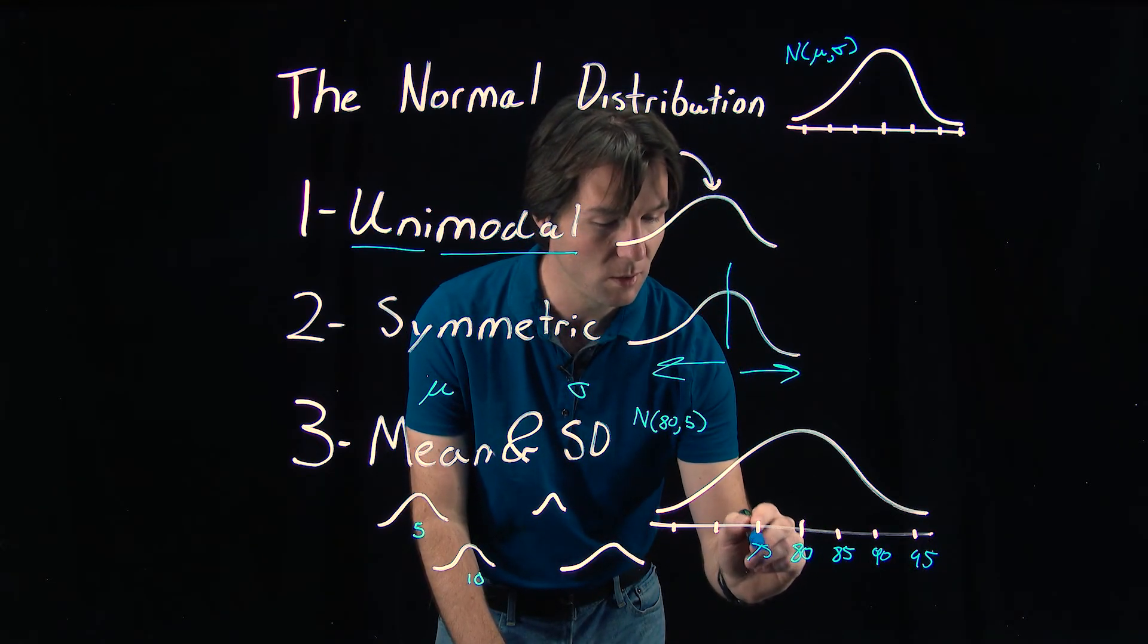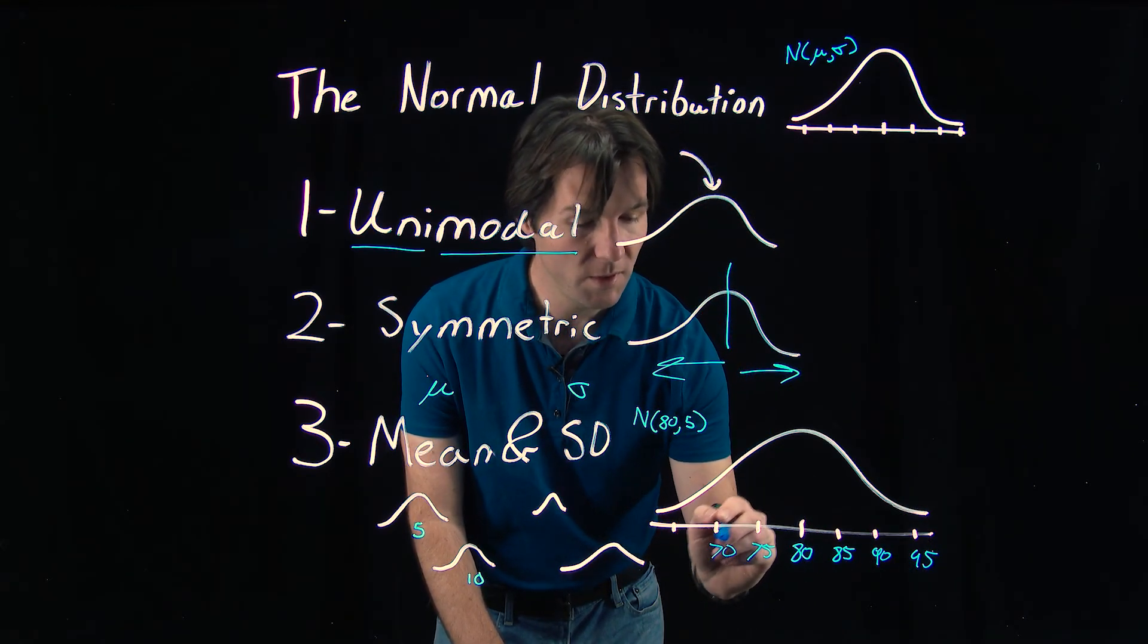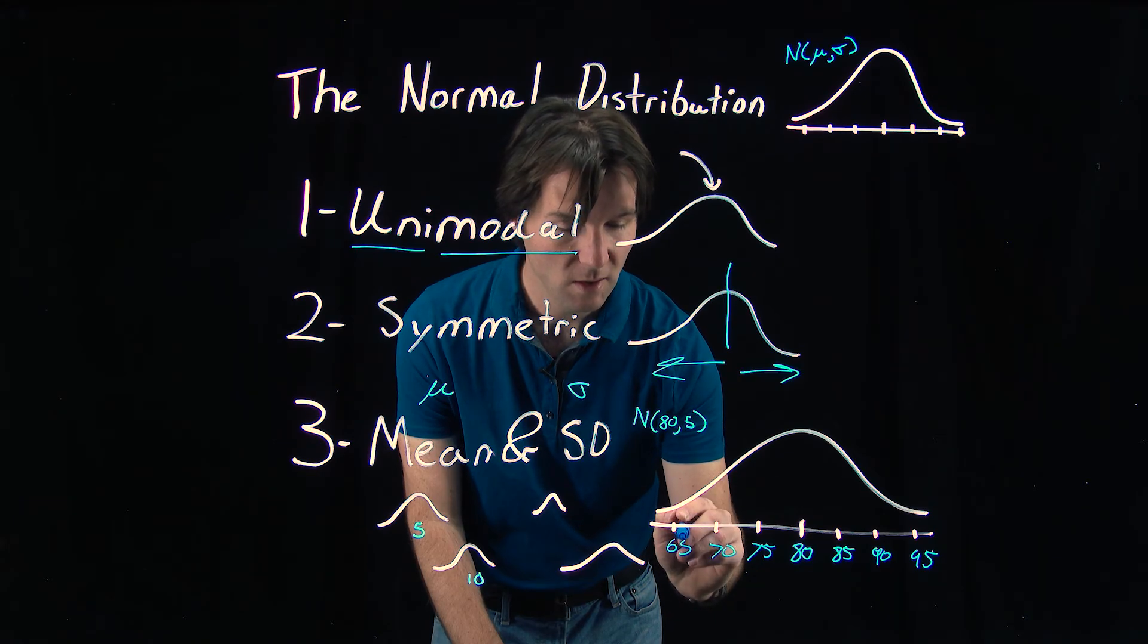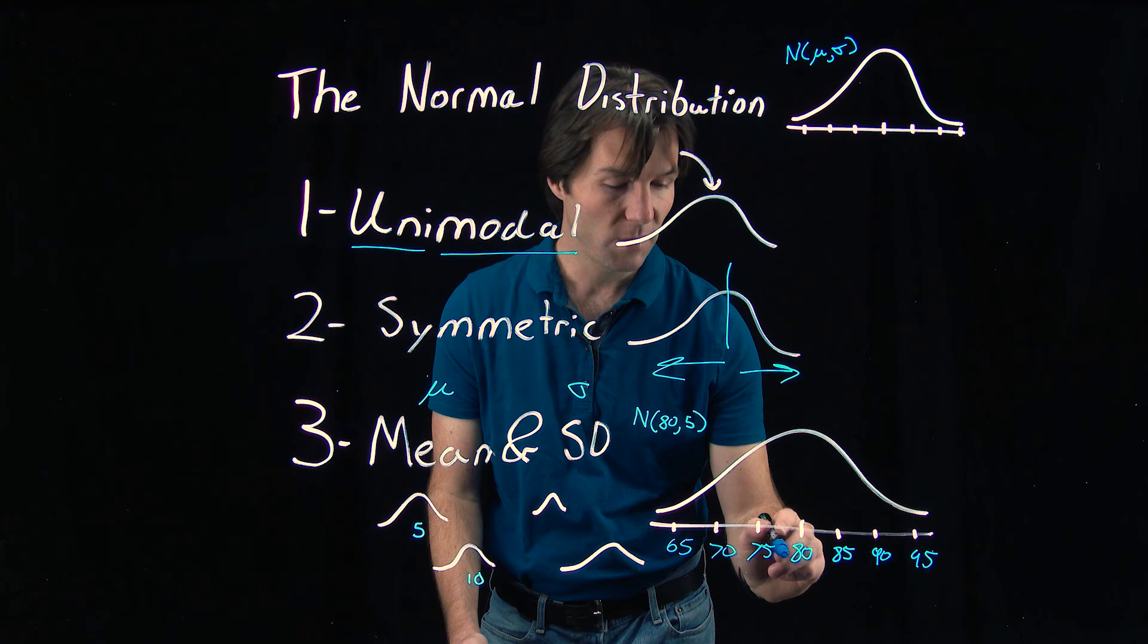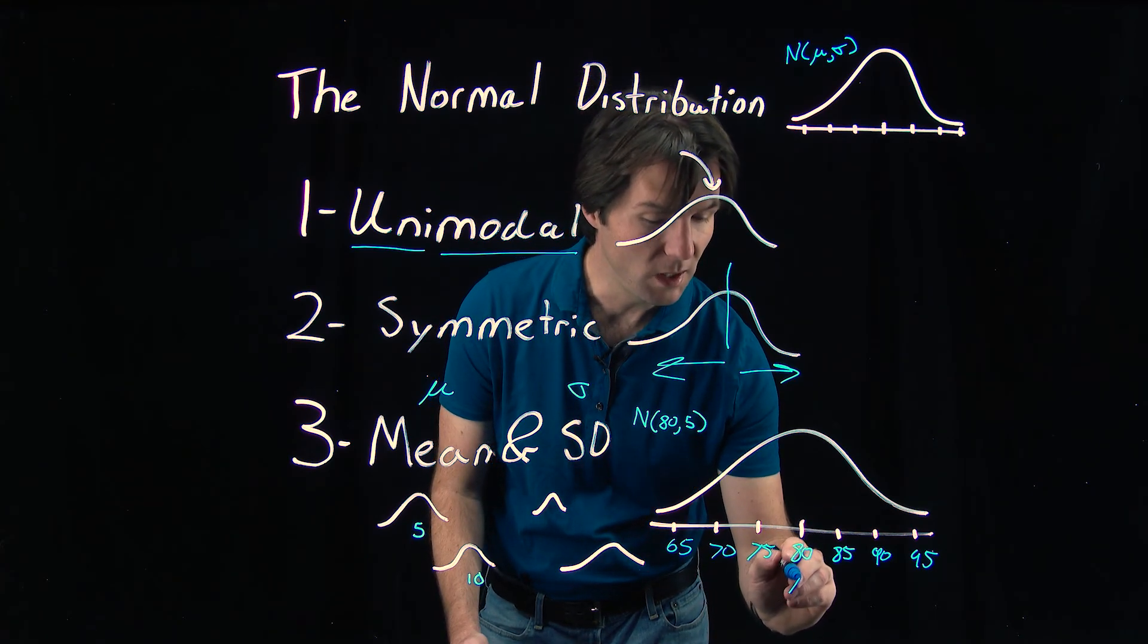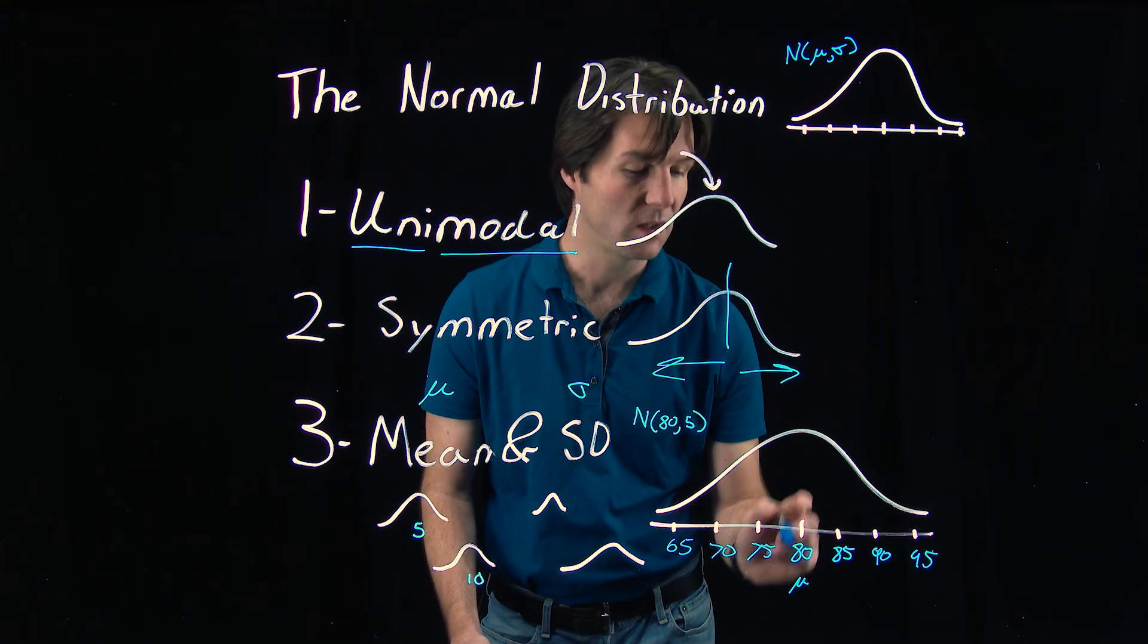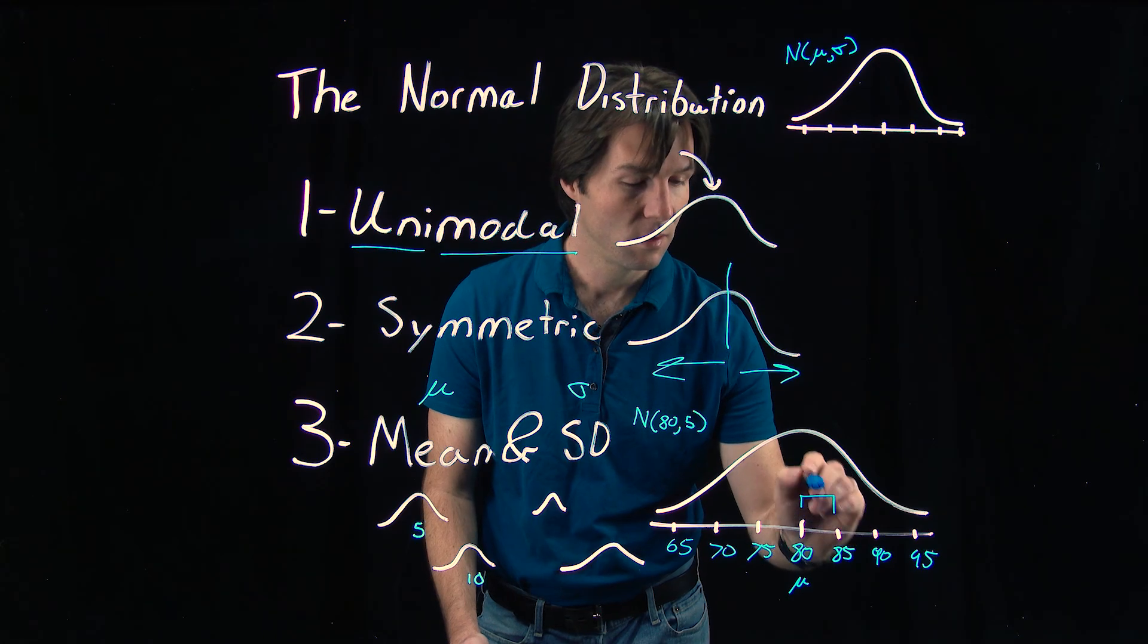Now we're just going to subtract and go down. All of these numbers are just 5 less than the previous one. And what you should notice is the very center of the curve has a mean of 80 and a standard deviation of 5.